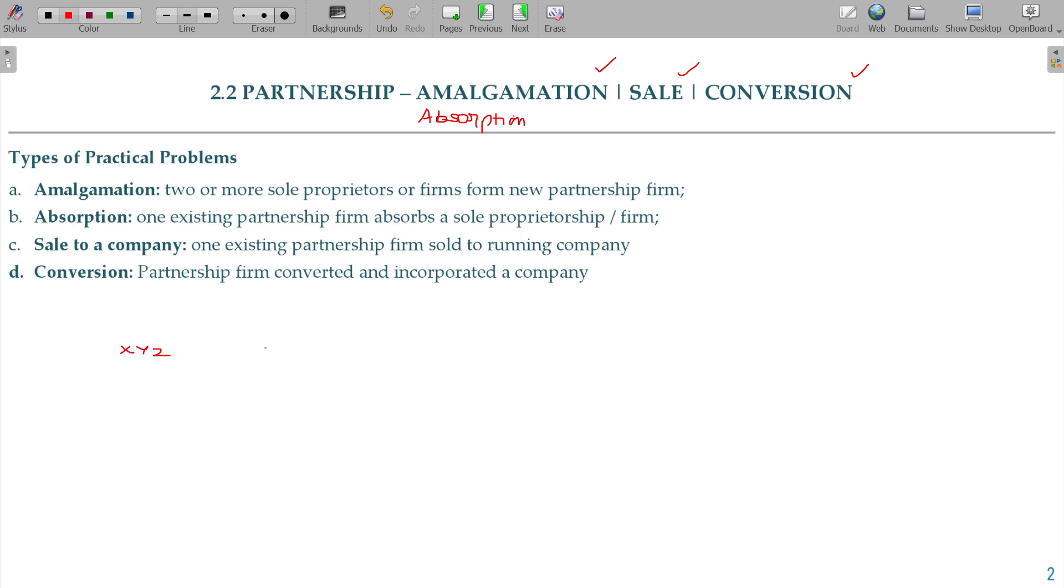XYZ is a partnership firm. ABC is a partnership firm. These two change. A to Z is a firm created. If you create, XYZ is closed, ABC is closed. When two companies merge, one company is called amalgamation.